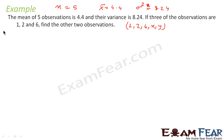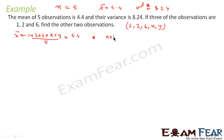Let us find the mean: mean = (1 + 2 + 6 + x + y) / 5 = 4.4. So x + y = 4.4 × 5 − 9 = 22 − 9 = 13. We have our first equation: x + y = 13.